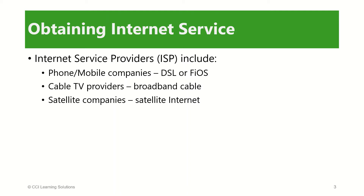Accessing the internet from your school or office is easy because the internet service is already running, and you can access it either through Ethernet or Wi-Fi. However, at some point someone at your school or office had to decide which service to purchase and arrange to have it set up. If you want to add internet service to your home, you will need to decide which type of service you want, how fast you need that service to be, and how much you would be willing to pay for it.